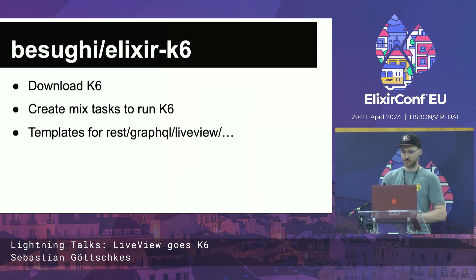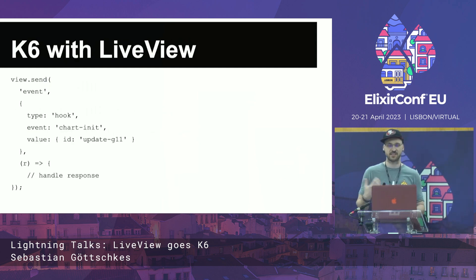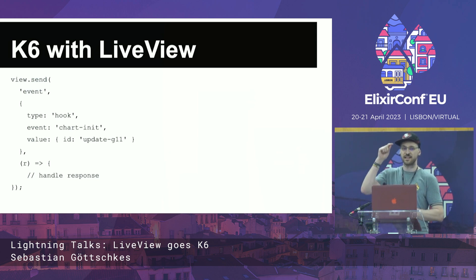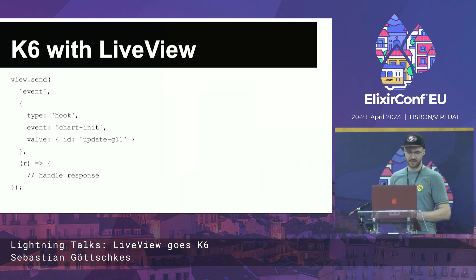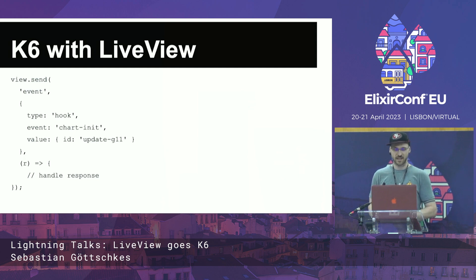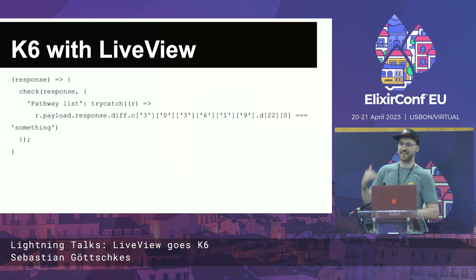How this looks with LiveView is that you can actually send events. K6 doesn't have a browser, so you cannot click around — instead, you need to do what the JavaScript in your browser does, for example send events to the LiveView. In this example, we send a chart init event, and then you need to handle the response. This is where it gets ugly, because this is how it looks for us if you want to evaluate the response from LiveView.